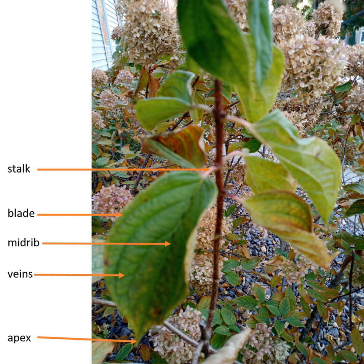Plants breathe through tiny holes on the leaves called stomata. The stomata are formed on the lower rough surface or back part of the leaf. The sending out of excess water by plants through the stomata on the leaves is called transpiration. If this presentation has helped you, subscribe, like and share with friends.